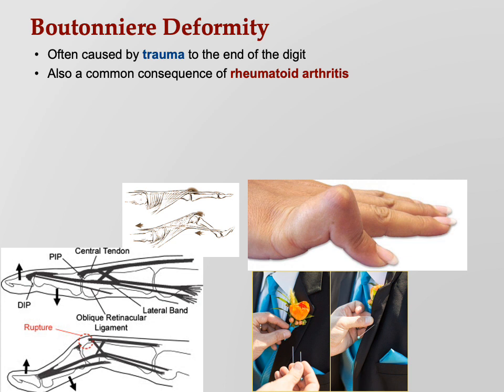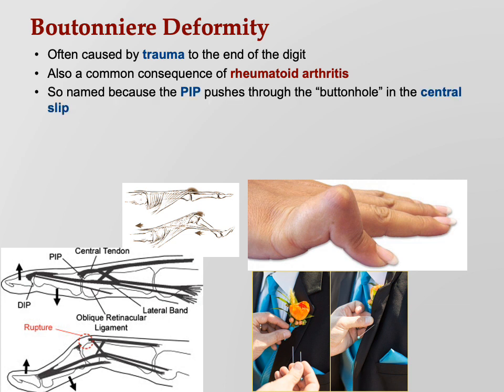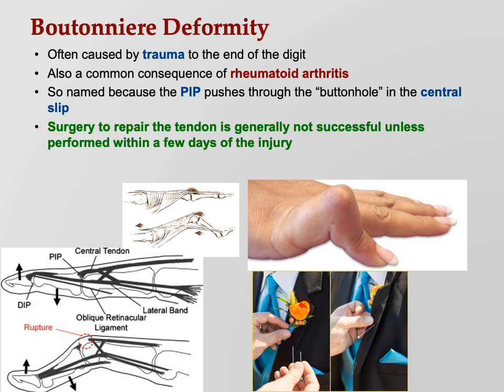It's often caused by trauma and can also be a consequence of rheumatoid arthritis. In the picture on the right, the shape of that person's little finger is how my little finger looks now. The proximal interphalangeal joint has become a synostosis — the bones simply fused together into one solid chunk. It's called boutonniere deformity because the PIP joint pushes through the central extensor tendon, like a boutonniere flower going through a buttonhole on a lapel.